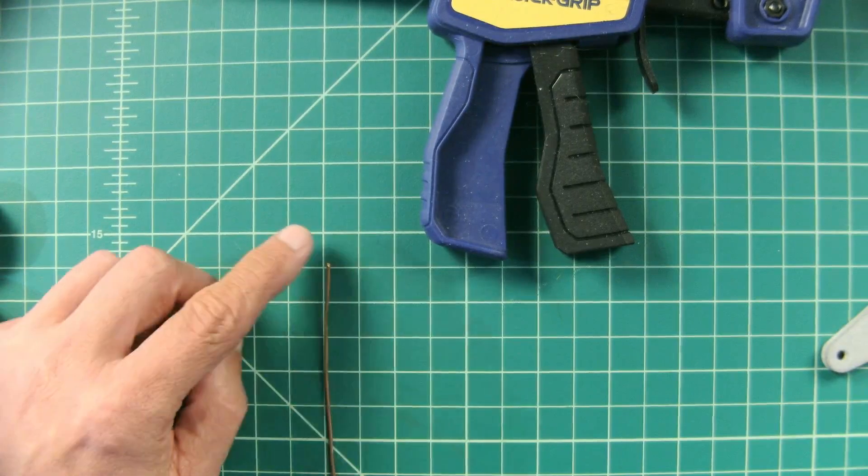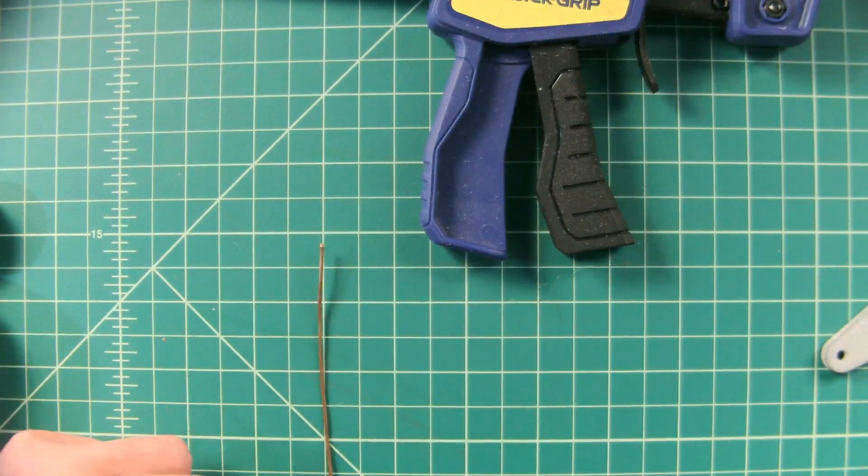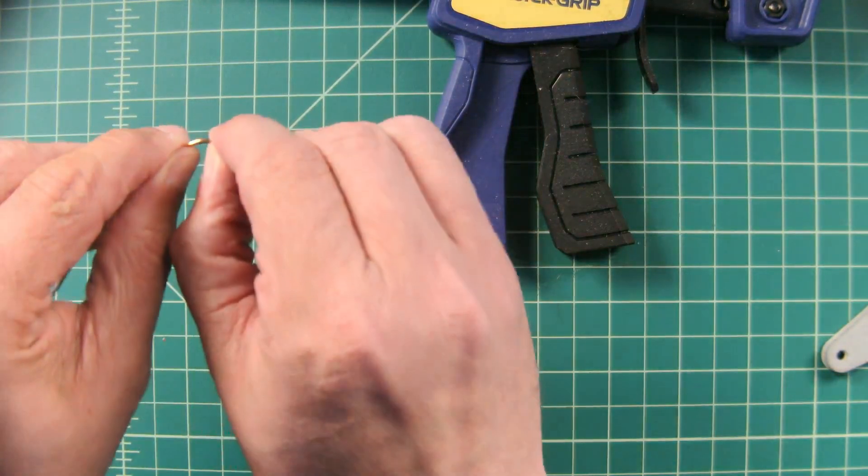Each square is a half inch, so I'm going to measure six: one, two, three, four, five, and six. Then I'm going to bend this wire.